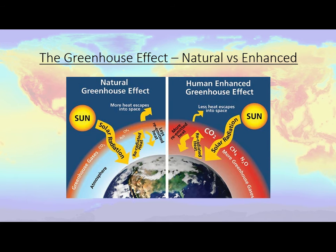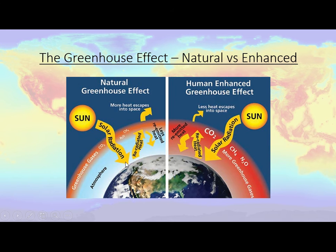After solar radiation is absorbed, it's re-radiated as heat. Some of that heat bounces off greenhouse gases — which act like a blanket, trapping heat. In a normal scenario, a lot of the re-radiated heat escapes into space and some bounces back, giving us a double warming. This is essential for life on Earth, because our climate would be too cold without that additional re-emitted heat.